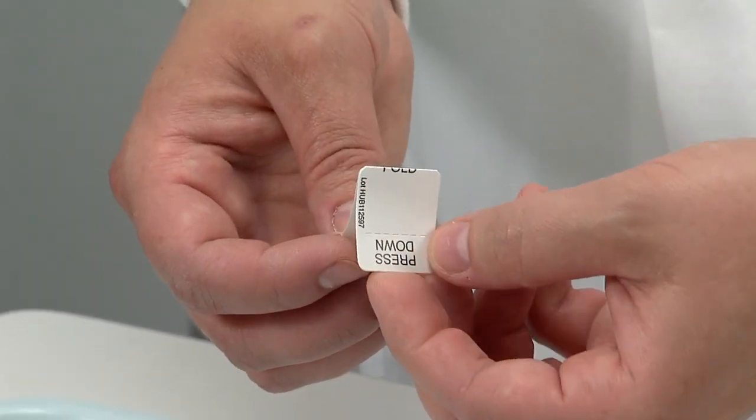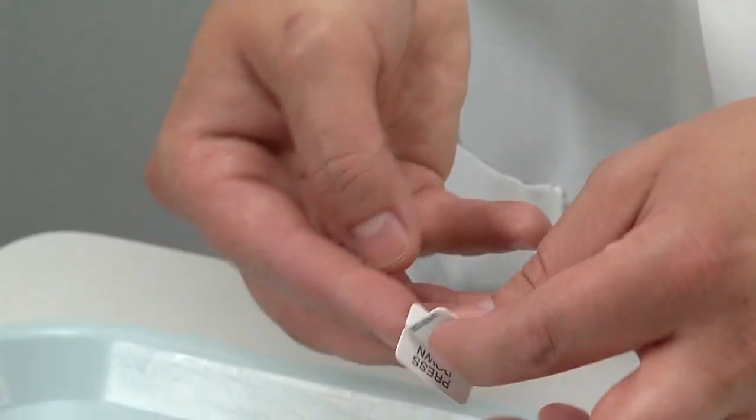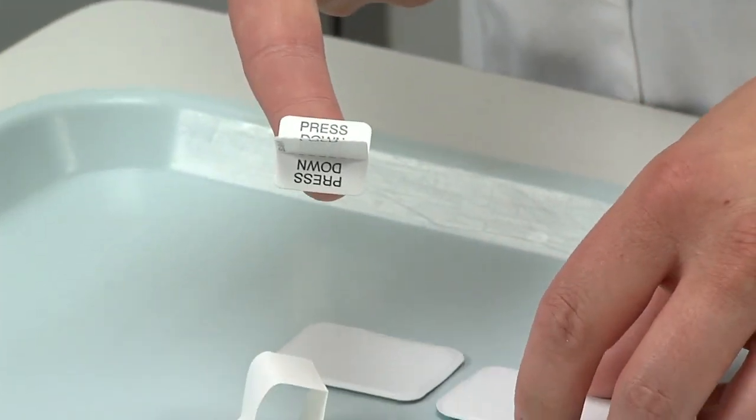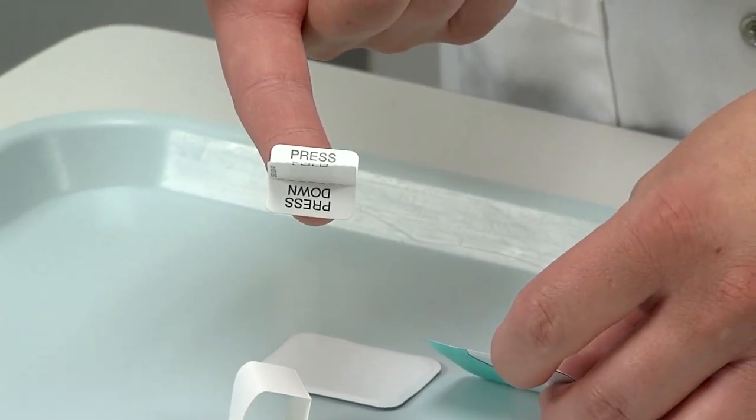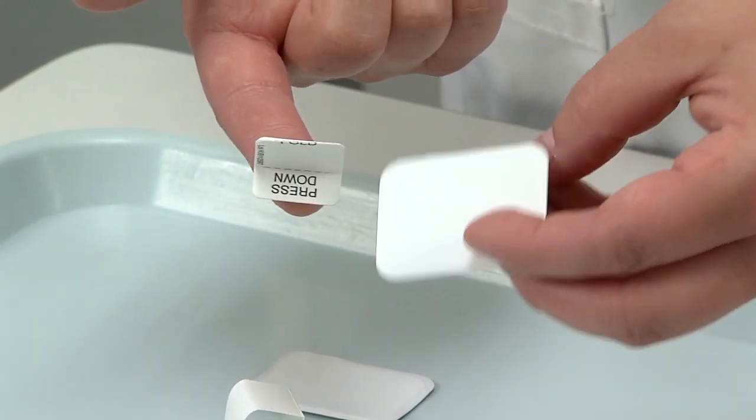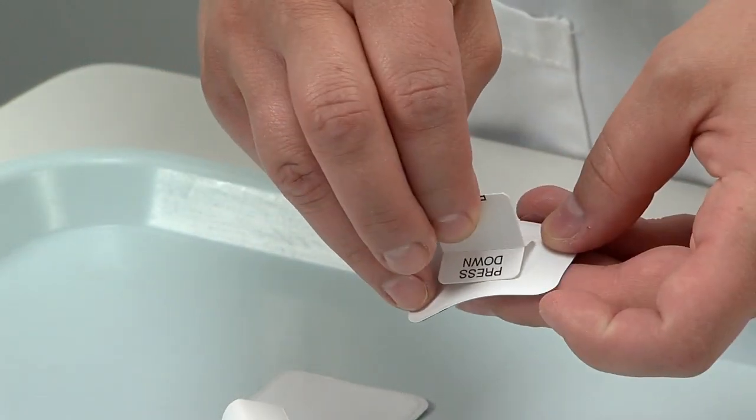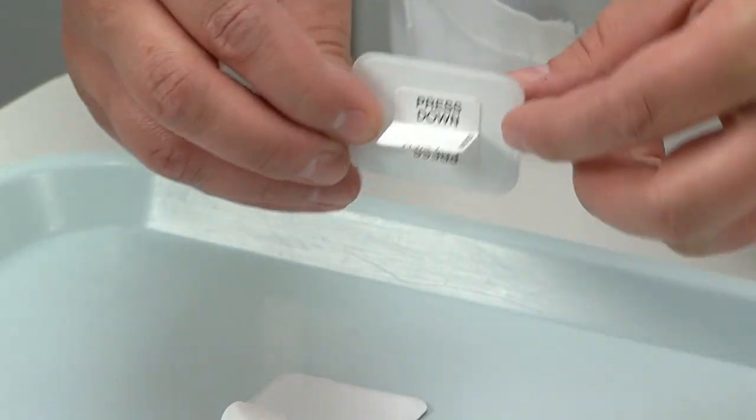The two little wings on the side where it says press down are going to come out like so. Then this tab is going to be placed on the center of the front of the film. Once again, it's important to identify the front from the back, and we're going to stick that right here on the middle of the film.